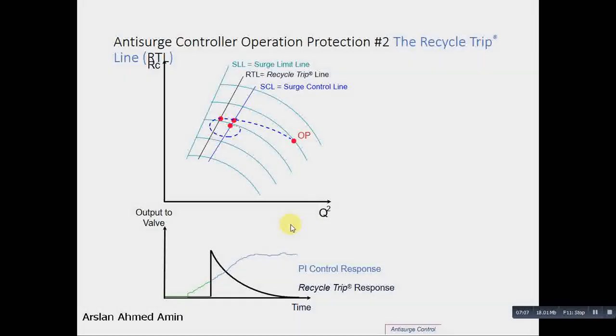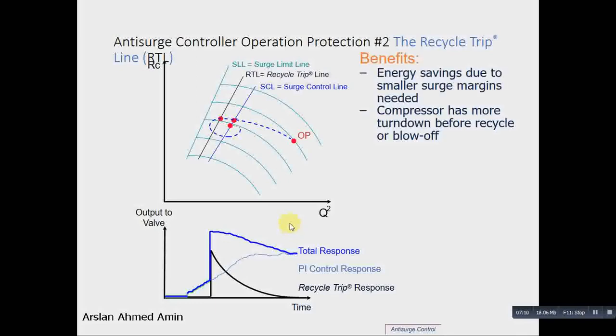Benefits: energy savings due to the smaller surge margin needed. Compressor has more turndown before recycle or blow-off. Surge can be prevented for virtually any disturbance. We can reduce this margin because we know that there is another margin line we have defined in-between. When the operating point will touch this line, suddenly the recycle will open, which will protect the compressor. In this way, this margin can be reduced. But normally, it is kept at 10%, and the recycle trip line is kept at 5% with respect to the surge limit line.